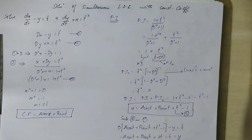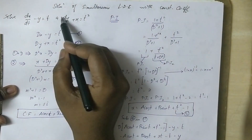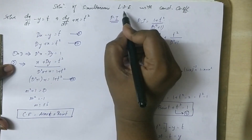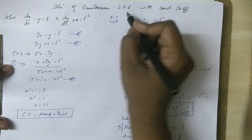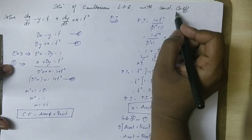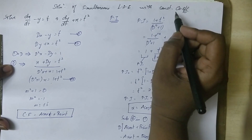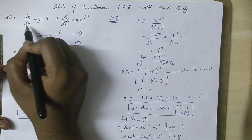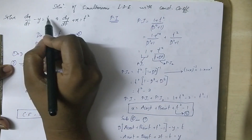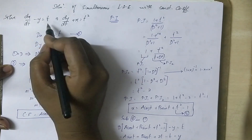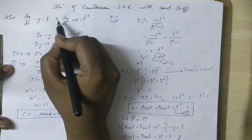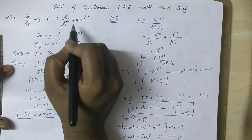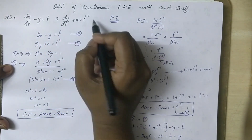Hi guys, in this video we will talk about solution of simultaneous linear differential equations with constant coefficients. We will solve: dx/dt minus y equal to t, and dy/dt plus x equal to t squared.